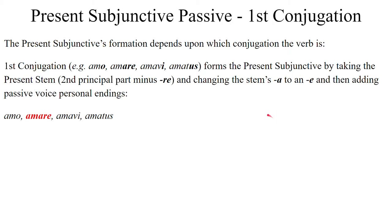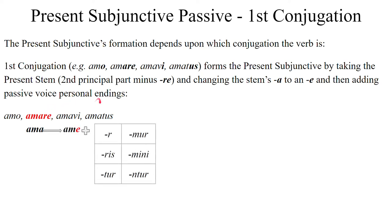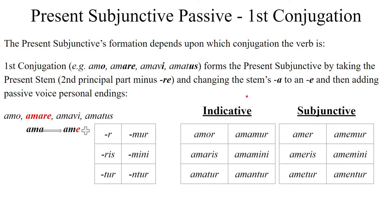For the passive voice, same thing. Take the present stem of the verb by taking the second principal part and chopping off the -re, changing the A to an E. Only this time, for the passive voice, add the passive voice personal endings: -r, -ris, -tur, -mur, -mini, -untur. I have included the passive indicative in the present tense for comparison: amor, amaris, amatur, amamur, amamini, amantur. The subjunctive looks like: amer, amaris, amatur, amamur, amamini, amantur. So hopefully you can see the difference between the two.